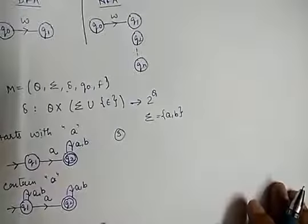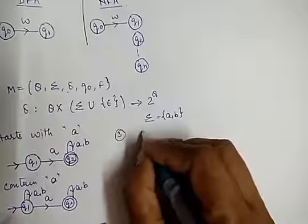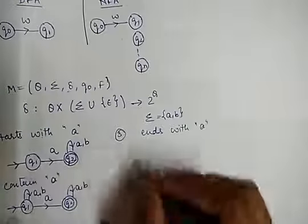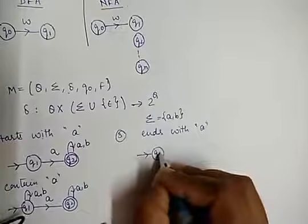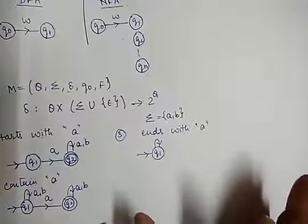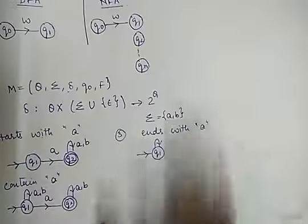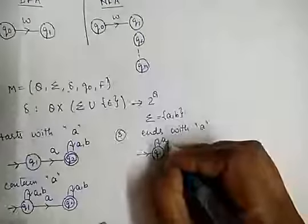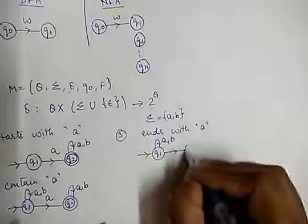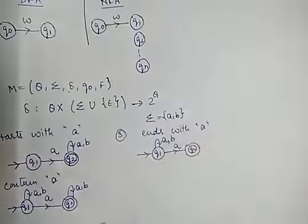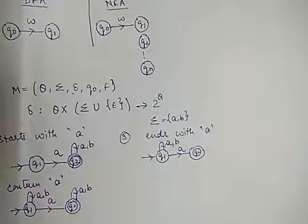Now, the third example: I have to create an NFA for all strings which end with A — just the opposite of the first NFA. If Q1 is the initial state, I have to ensure the string always ends with A and I don't care what comes at the beginning, whether it comes with A or B. This is how we draw the NFA for strings ending with A.